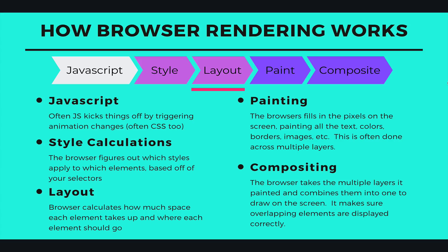Then we move on to layout. This is when the browser is calculating where elements go, how much space they take up. Often animating the margin, for example, will affect not just the element itself but things that come after it in the layout. So you might be moving multiple things around just by animating one element.